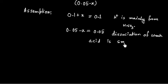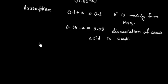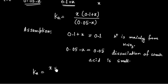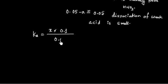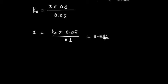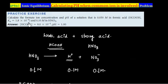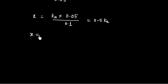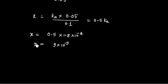Using these two assumptions, Ka = X × 0.1 / 0.05. Solving for X: X = Ka × 0.05 / 0.1 = 0.5 × Ka. Ka for formic acid is 1.8 × 10⁻⁴, so X = 9 × 10⁻⁵.